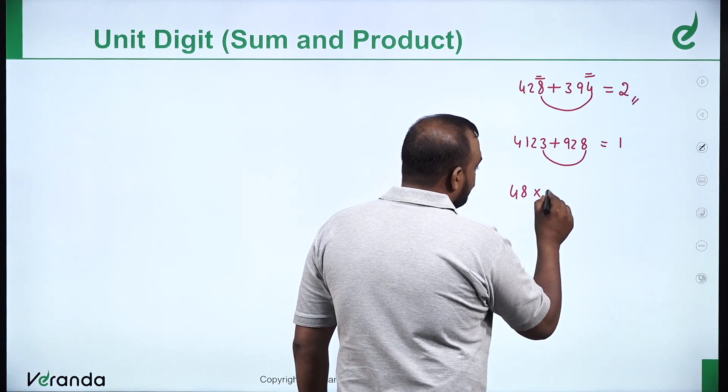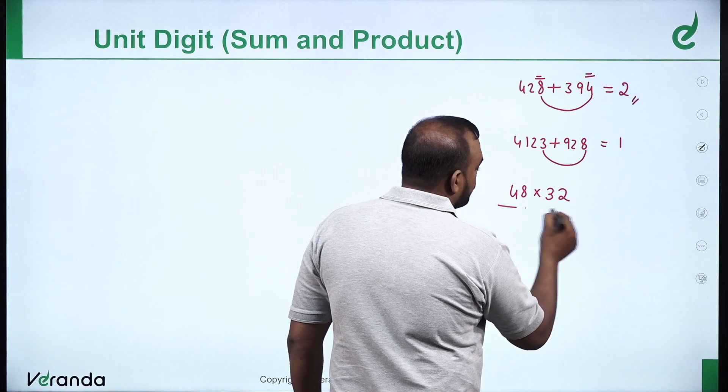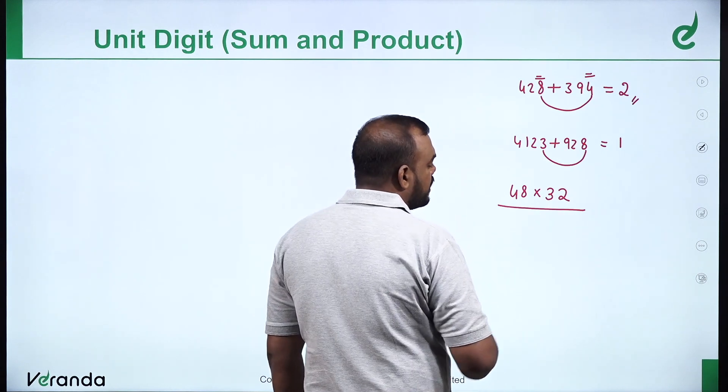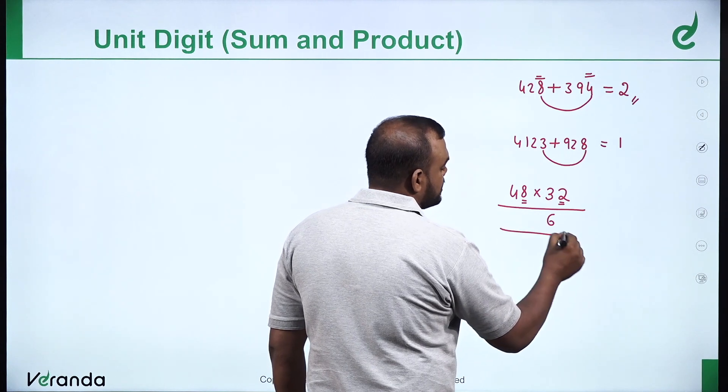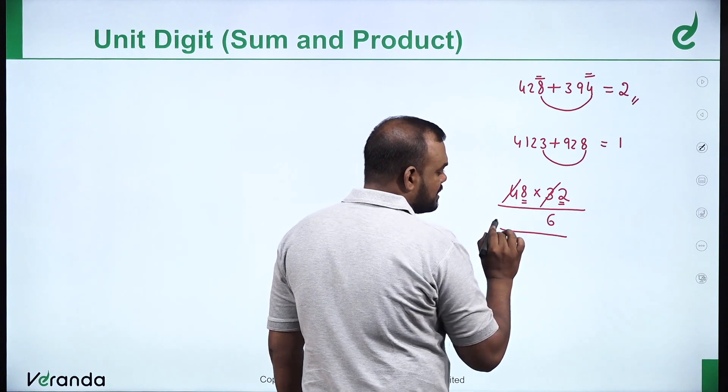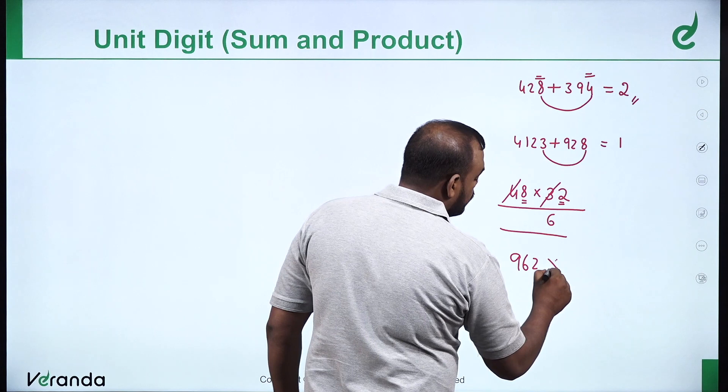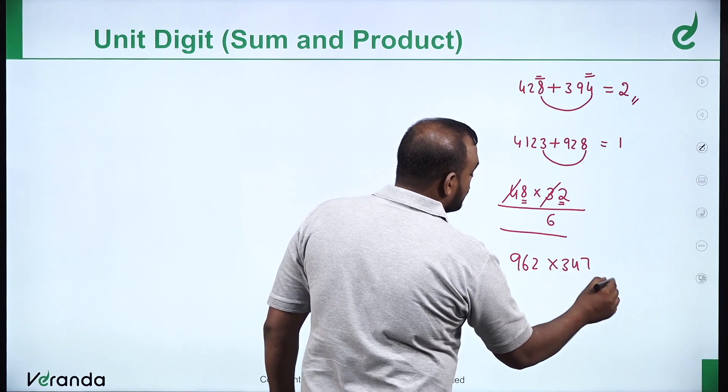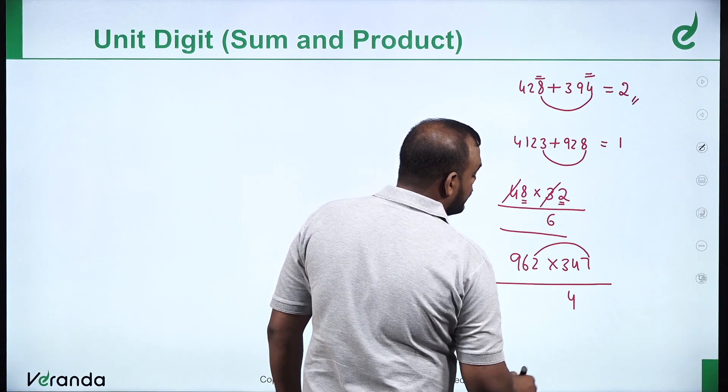For products, 48 into 32 - the unit digit of this product is 8 into 2. Another example: 692 into 347 - 2 into 7 is 14, so the unit digit is 4.